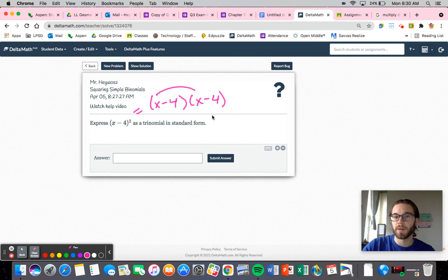Again, you're going to distribute. So x squared, negative 4x, negative 4x plus 16. So really, what are we noticing here? We have this squared. We have this squared. And then we have two of the middle terms. But the middle terms are the same. So you end up with this: x squared minus 8x plus 16.